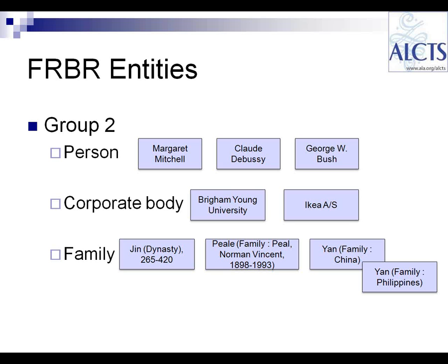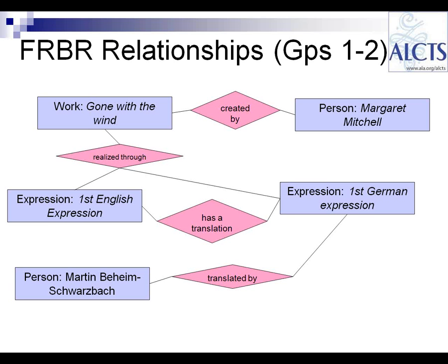We would create such a record only once for each entity, rather than our current practice in MARC of repeating much information every time we create a new bibliographic record. Entity records would be linked to other Ferber entity records. For example, the entity record for Margaret Mitchell would be linked to the work record for Gone with the Wind via a creator relationship link. Any entity record can be linked to any other entity record as appropriate. Margaret Mitchell has a creator relationship with Gone with the Wind; the work has a 'realized through' relationship with two expressions — English and German. The German expression has a 'translated by' relationship with the person entity Martin Baheim Schwarzbach.